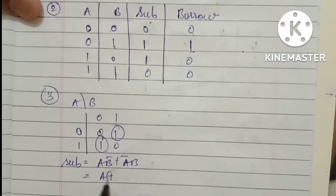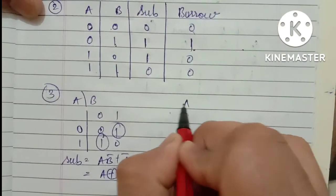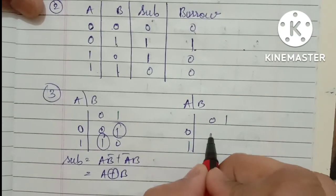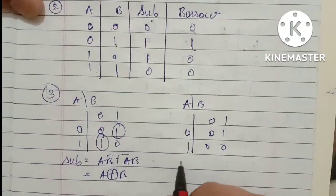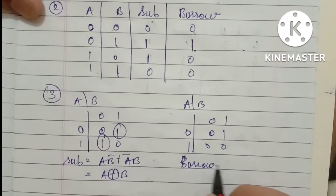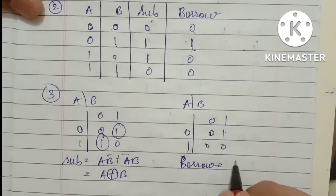Same only, that is A XOR B. Similarly, for carry, draw the K-map. Write this for borrow. This will provide you A bar.